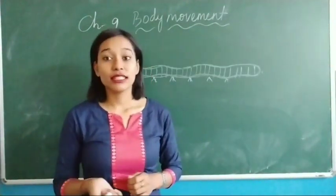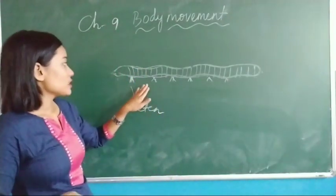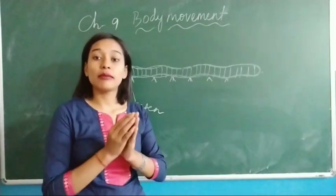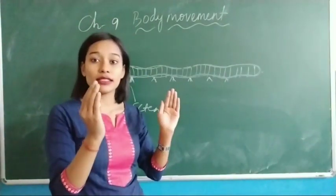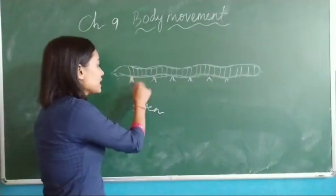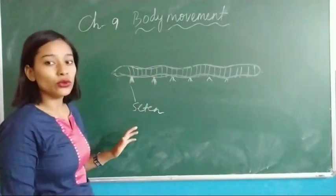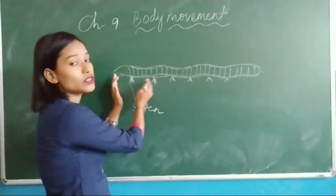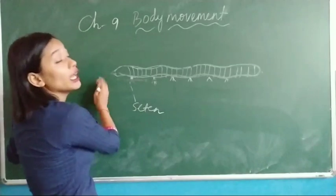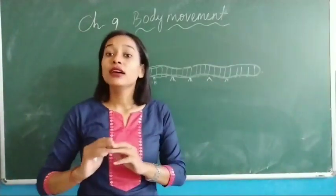Now we will discuss movement in earthworms. The body of an earthworm is made up of muscle which is able to contract and expand. They have small muscle-like structures for gripping. When they have to move, they will contract and then expand. In this way, movement takes place in an earthworm.